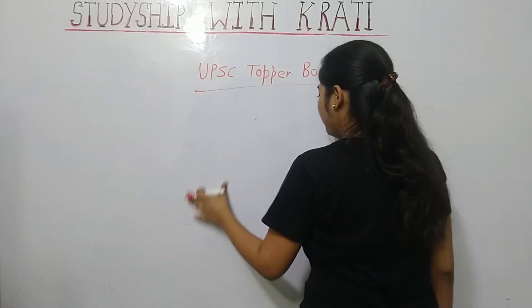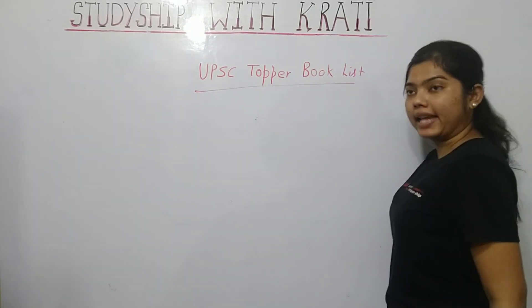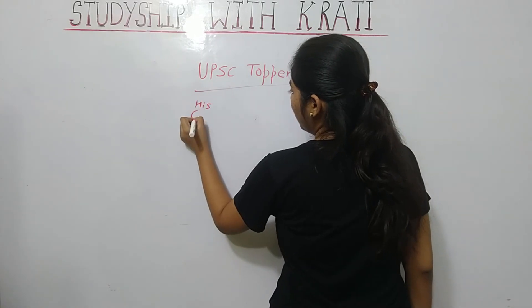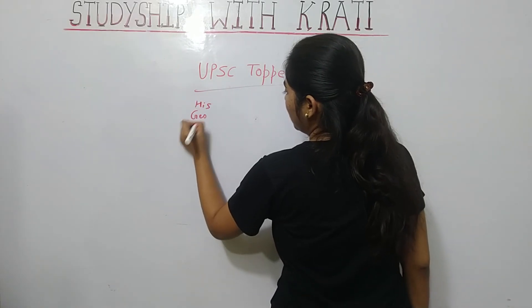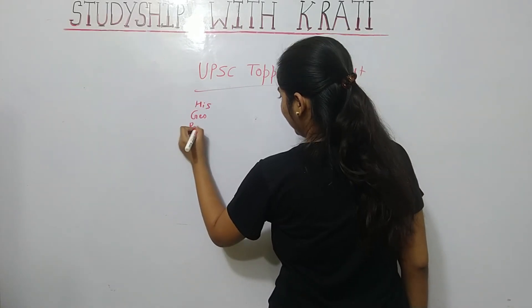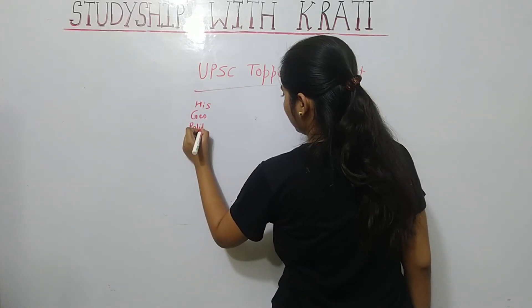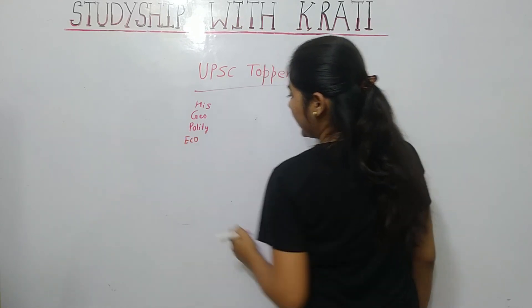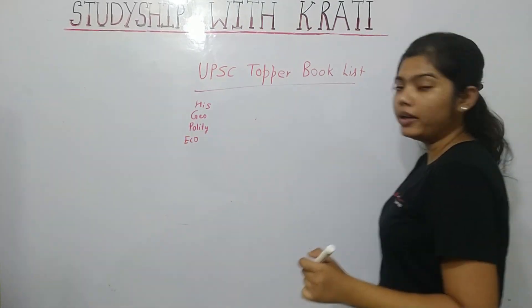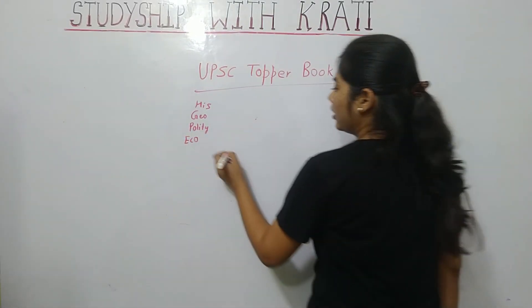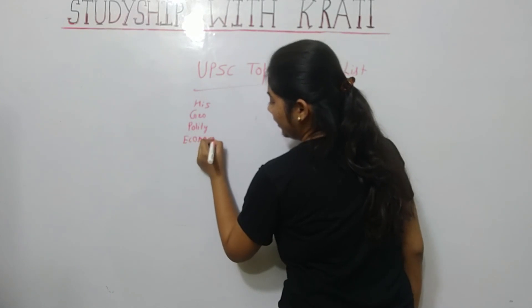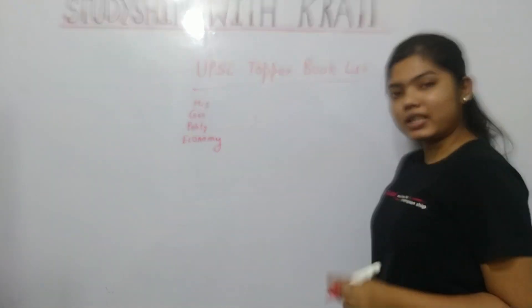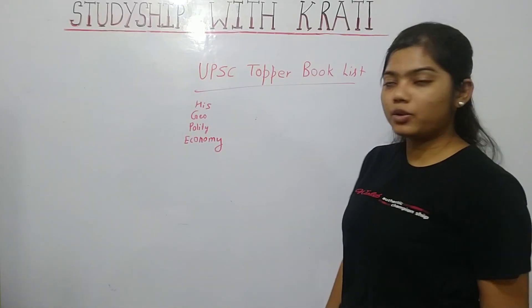UPSC Toppers Book List. The subjects you have to cover are History, Geography, Polity, and Economics. These are the core subjects you need to prepare for the UPSC exam.